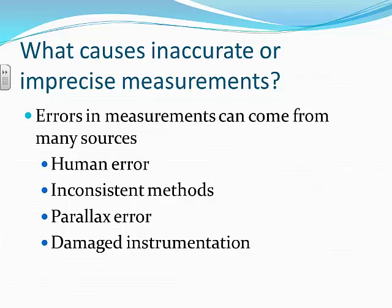Parallax error occurs when you read an instrument from an angle rather than straight on — like reading a clock from far to the left or right makes it harder to determine what the minute hand is pointing at. Damaged instrumentation is another source: an old ruler with a worn-off zero edge is a damaged instrument, making it impossible to see where zero begins.